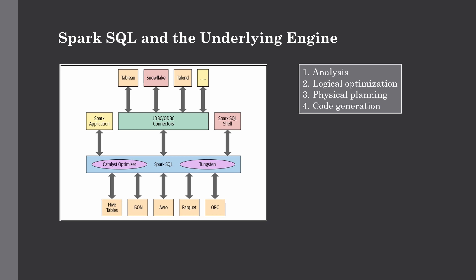Analysis is all about generating an abstract syntax tree for your query. The next stage is logical optimization. It basically comprises two stages: applying standard rule-based optimization, the Catalyst optimizer constructs a set of multiple plans, then uses the cost-based optimizer, also known as CBO, which assigns cost to each plan. These plans are laid out as operation trees and include processes like constant folding. The logical plan is input into physical planning.